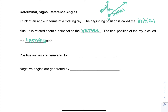We generate an angle every time we rotate from the initial side to the terminal side. We generate a positive angle by rotating counterclockwise. This might be opposite of what you think — if you think of a clock, you think positive is going clockwise, but it's the opposite. So positive angles are generated by counterclockwise rotation, which means negative angles are generated by clockwise rotation.